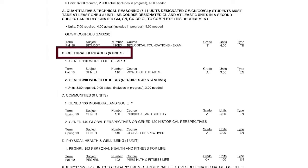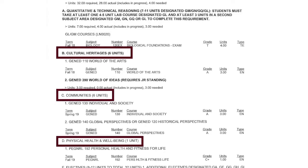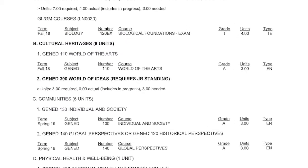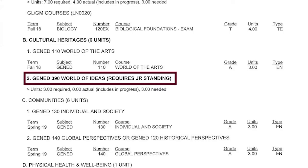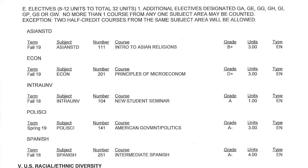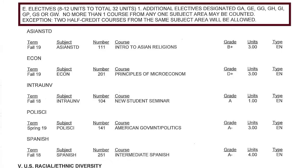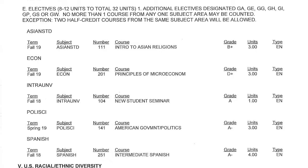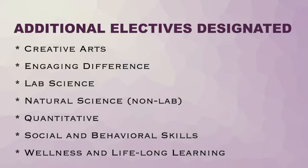The next three sections of the AAR are cultural heritages, communities, and physical health and well-being. Of note is Gen Ed 390 or Core 390, World of Ideas, which requires junior standing — meaning you need to have completed 60 credits in order to enroll. The next section, electives, is where you truly have a great deal of freedom. This area allows you to pick 8 to 12 credits from any course labeled general education, searchable by designations including creative arts, engaging differences, lab science, natural science, quantitative, social and behavioral skills, and wellness and lifelong learning.